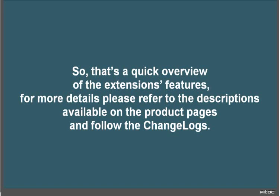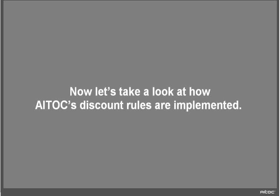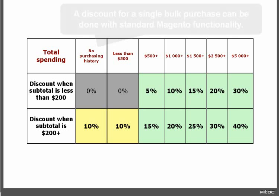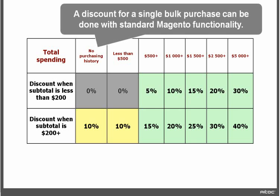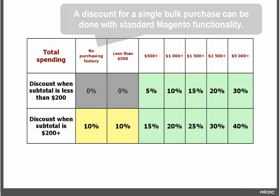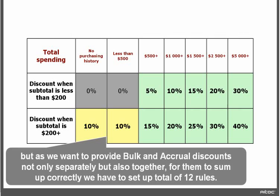So that's a quick overview of the extension features, and for more details please refer to the descriptions available on the product pages and follow the changelogs. Now let's take a look at how the Italko discount rules are implemented. A discount for a single bulk purchase can be done with standard Magento functionality. But as we want to provide bulk and accrual discounts not only separately but also together, for them to sum up correctly we have to set up a total of 12 rules.